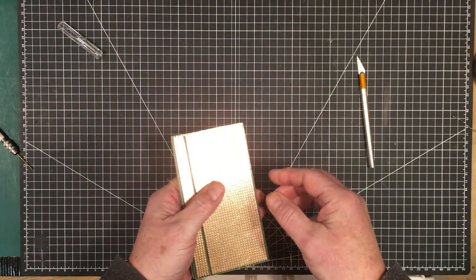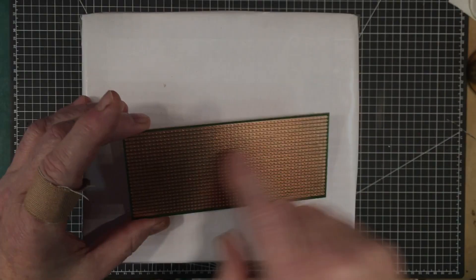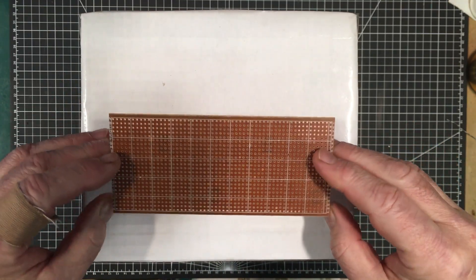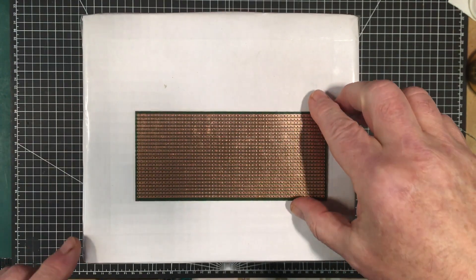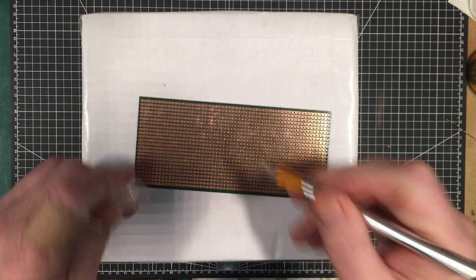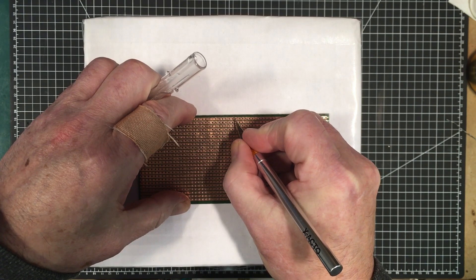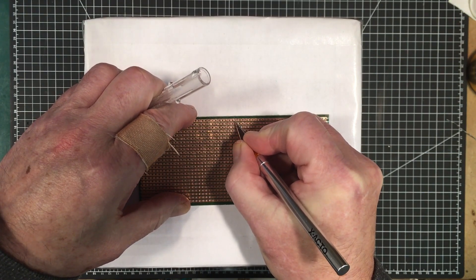It's got these copper strips and it's single-sided, which provides one of the benefits I'm looking for. The way I work with this, unlike a lot of people who use an exacto knife to cut the traces, I find that very tedious and it just takes a long time.